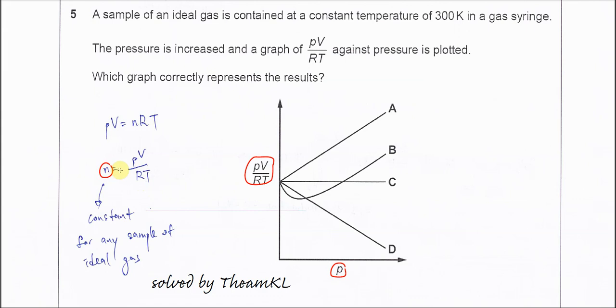For the ideal gas, this mole is always a constant for any sample of ideal gas, so n must be a constant. When we know n is a constant, it means PV over RT also needs to be a constant.